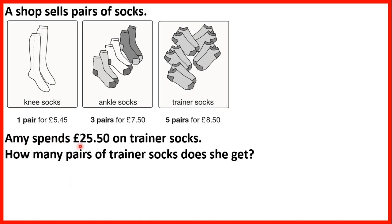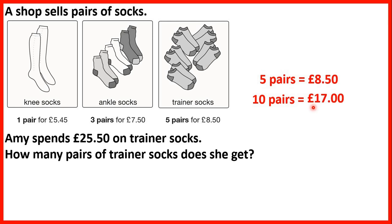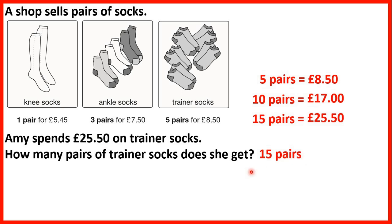Amy spends £25.50 on trainer socks. How many pairs does she get? We're told 5 pairs cost £8.50, so 10 pairs cost £17.00. To find 15 pairs we add what we got for 5 pairs to what we got for 10 pairs: £8.50 plus £17.00 is £25.50. That's exactly how much she spent, so she must have bought 15 pairs of trainer socks.